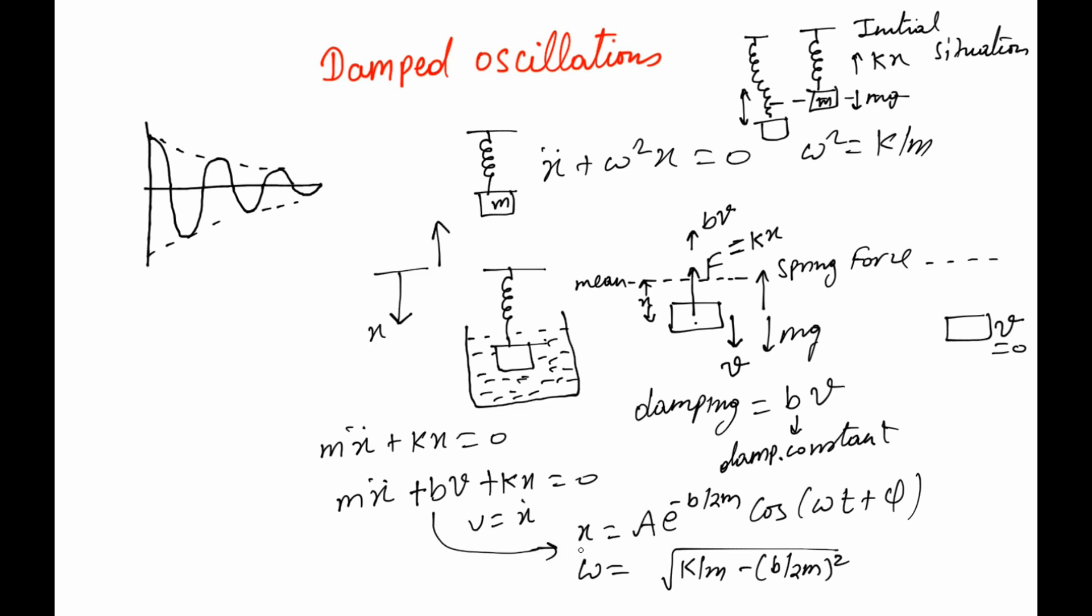What we see is that x is changing in time. In fact, there should be a t here because it's changing in time. So x is changing in time sinusoidally—you see it's a cosine wave—but on top of that, the amplitude, this whole amplitude, is also decaying. This function becomes smaller and smaller as we move forward in time.